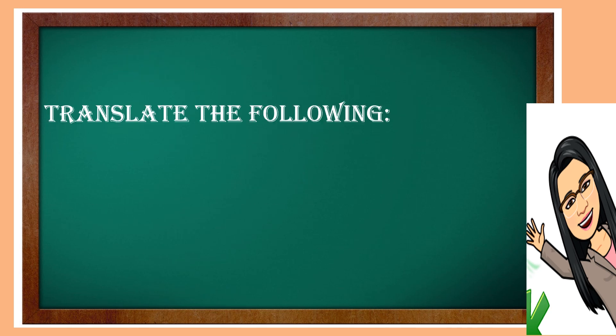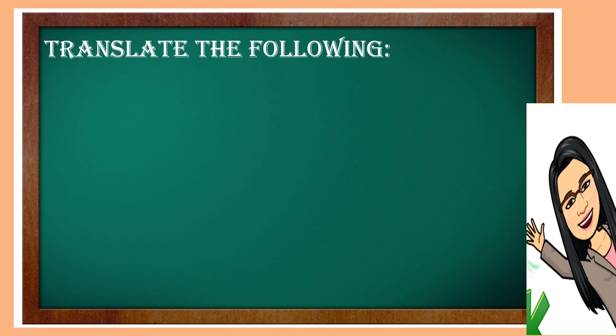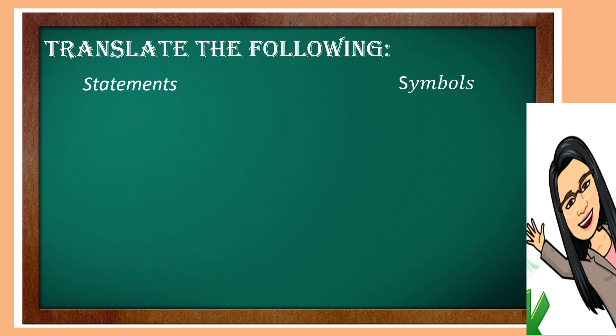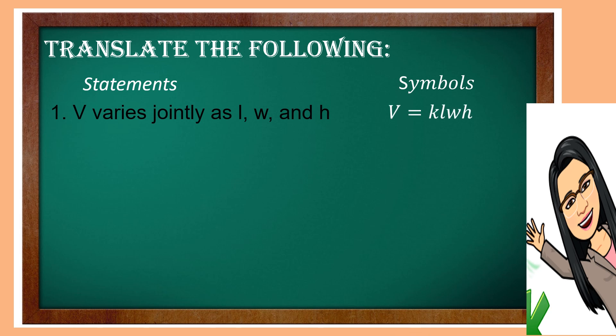Now let us translate the following statements into symbols. First, V varies jointly as L, W, and H. This can be written in symbols as V is equal to K times L times W times H.